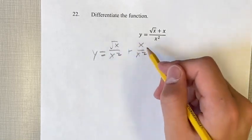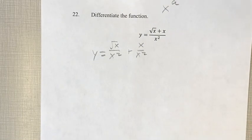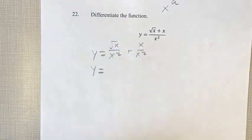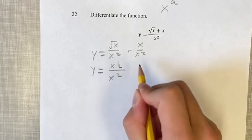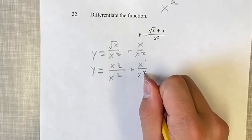Here, we can turn this both into the form x to the a, where a is some constant. If you remember, the square root of x is x to the one-half. Keep that divided by x squared plus x to the one, since x to the one is x, over x squared.